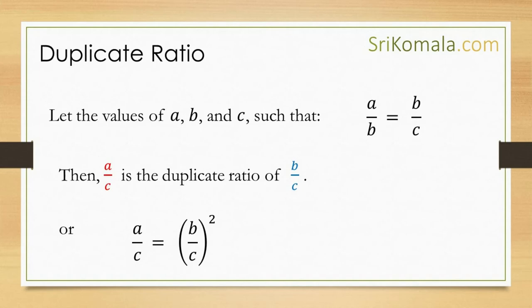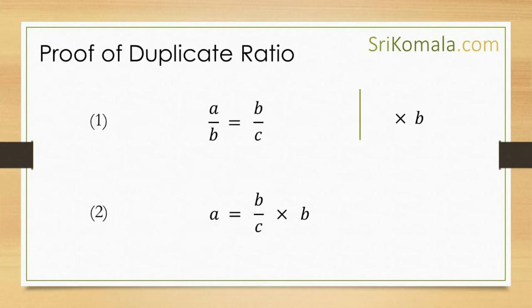The duplicate ratio is defined as follows. Let the values of a, b, and c be such that a to b is equal to b to c. Then, a to c is equal to the square of a per b. Before we prove the area of a square, firstly we need to prove the concept of duplicate ratio. This will be conducted as follows.